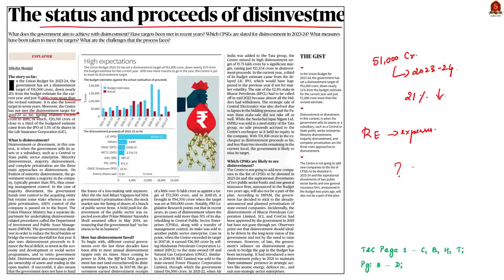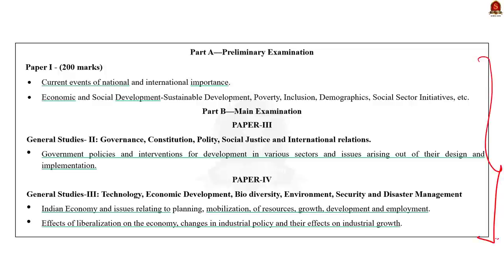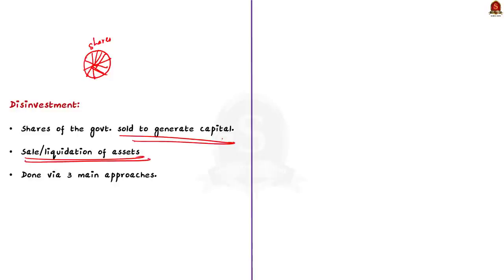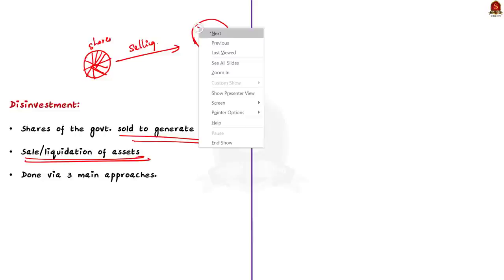What is disinvestment? The shares of various government companies held by the government act as earning assets. These assets or shares can be sold at any time to generate capital. When these shares are sold to earn capital, this process is called disinvestment. The government is selling its shares in various government companies. Note that in all cases the government share should never go below 51%. There are three main approaches: minority disinvestment, majority disinvestment, and complete privatization.